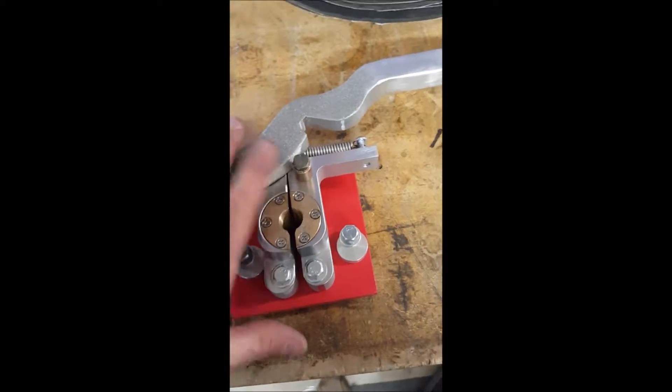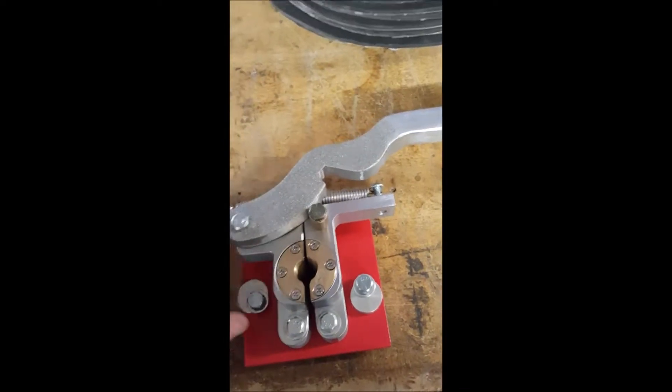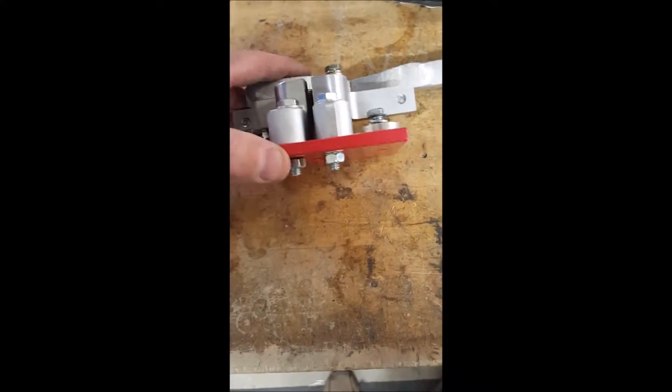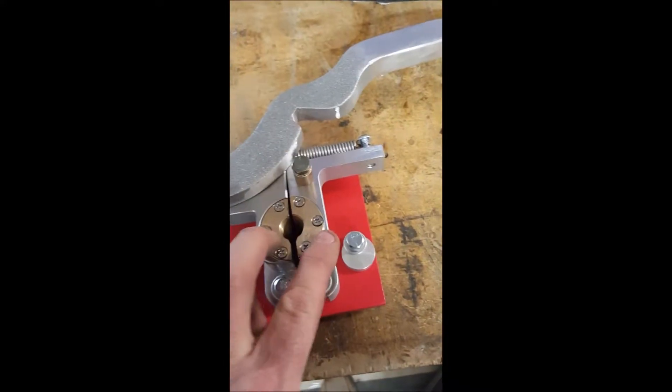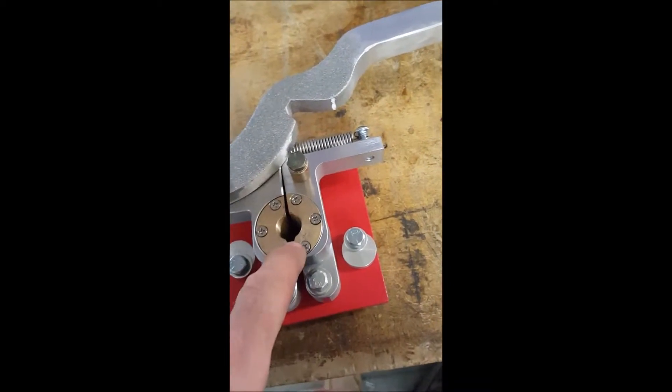So this is the assembled unit. Basically, you've got a set of feed dogs. You always want your v-notch and the feed dogs here at the bottom.